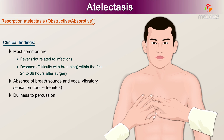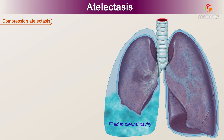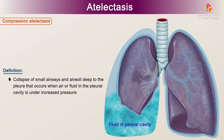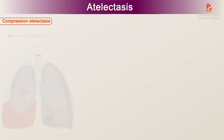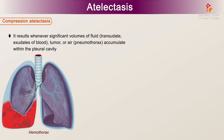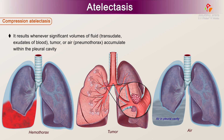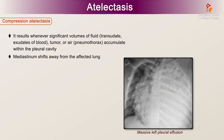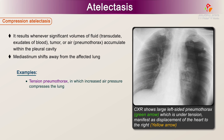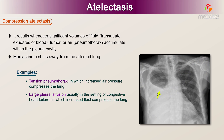The second form of atelectasis is Compression Atelectasis. Definition: Collapse of small airways and alveoli deep to the pleura that occurs when air or fluid in the pleural cavity is under increased pressure. It results whenever significant volumes of fluid — transudate, exudate, or blood — tumour, or air (pneumothorax) accumulate within the pleural cavity. The mediastinum shifts away from the affected lung. Examples include tension pneumothorax, in which increased air pressure compresses the lung, and large pleural effusion, usually in the setting of congestive heart failure, in which increased fluid compresses the lung.